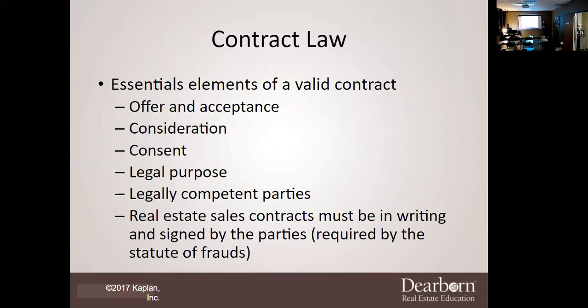Now let's get into the essential elements of a valid contract. The very first step is offer and acceptance. If I go to Mr. Eugene and say I want to buy your house — that is my offer. Mr. Eugene says he'll accept — and we have our offer and acceptance. We also need consideration: something of value being transferred between the parties.